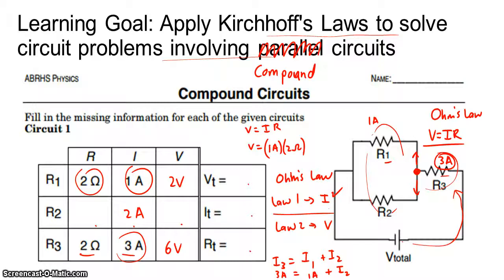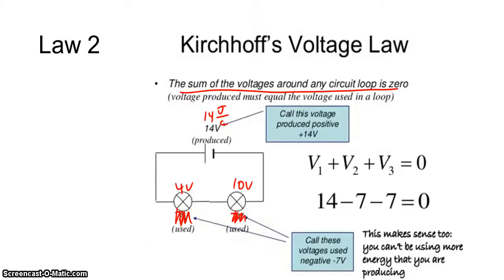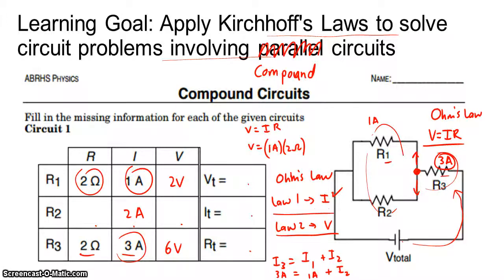Is there any other information we can find? Let's look at the second law. The second law says the voltage in any closed loop must sum to zero. Let's see what information we have — we know something about the voltage through R1 and the voltage through R3. So let's try to utilize that. The voltage through R1 is 2 volts, and the voltage across R3 is 6 volts.